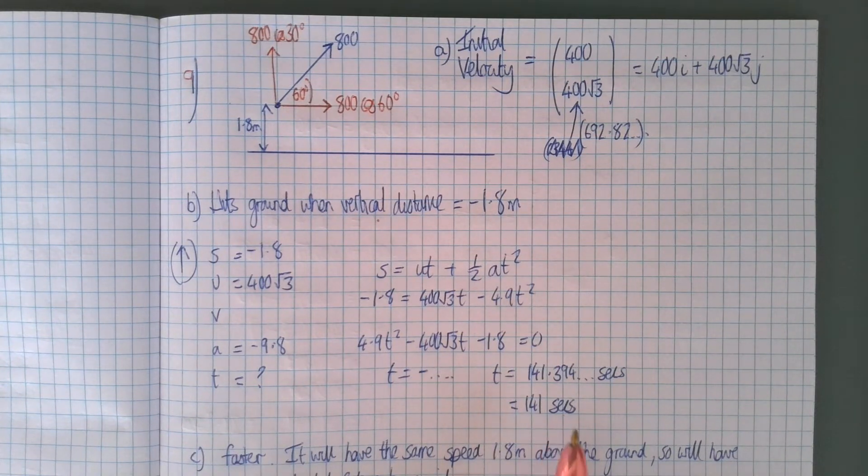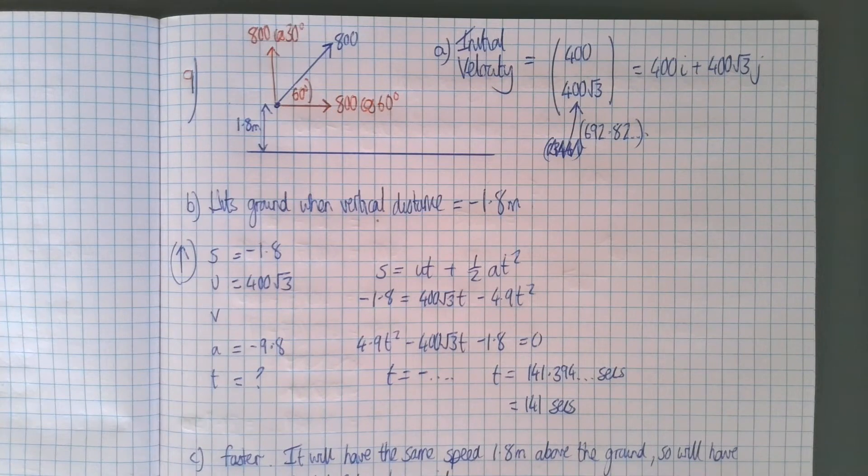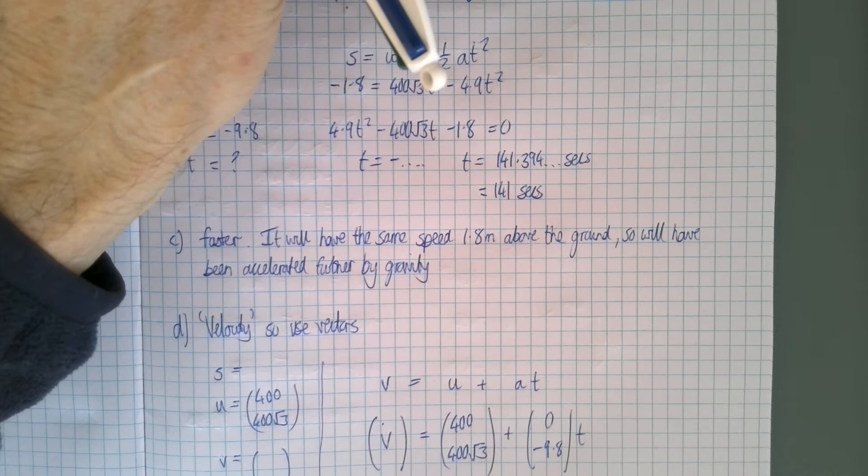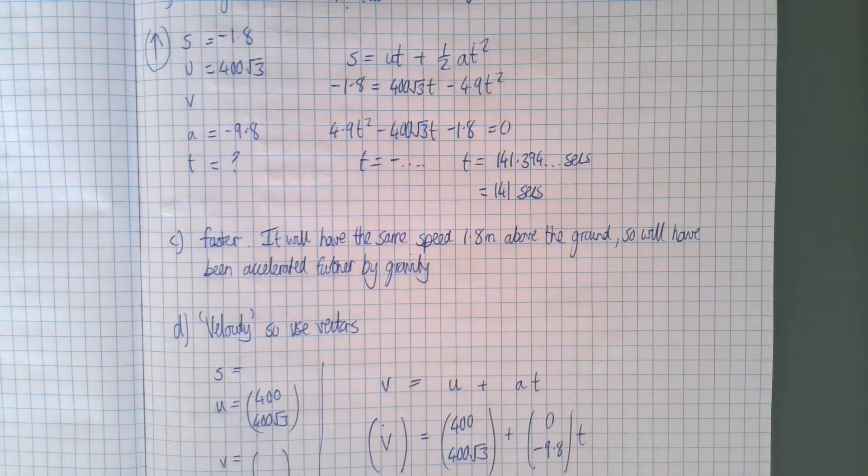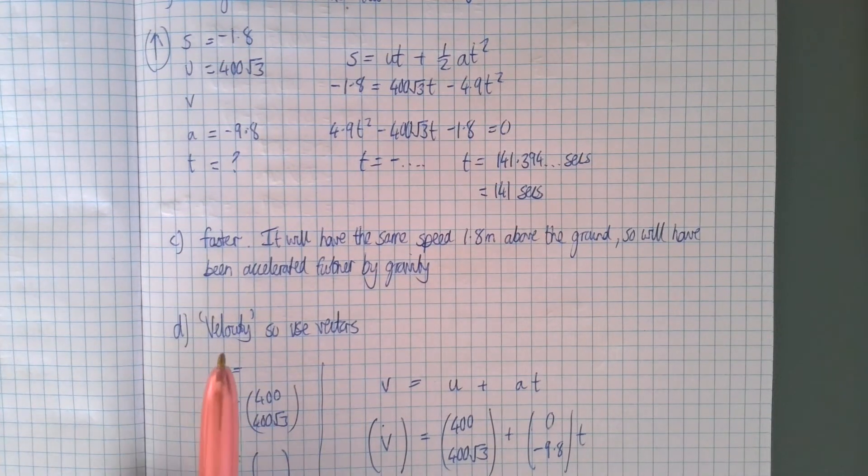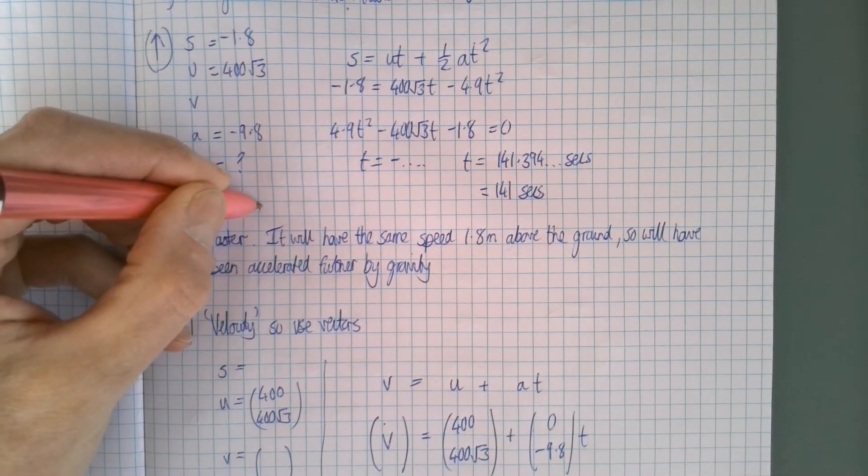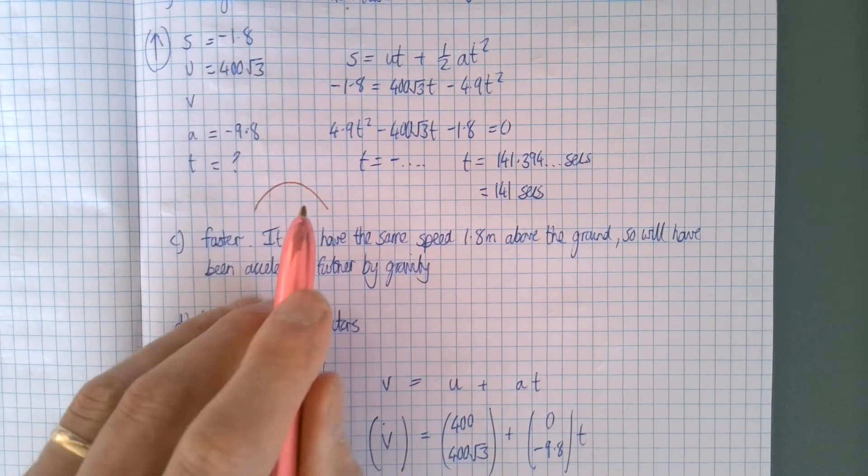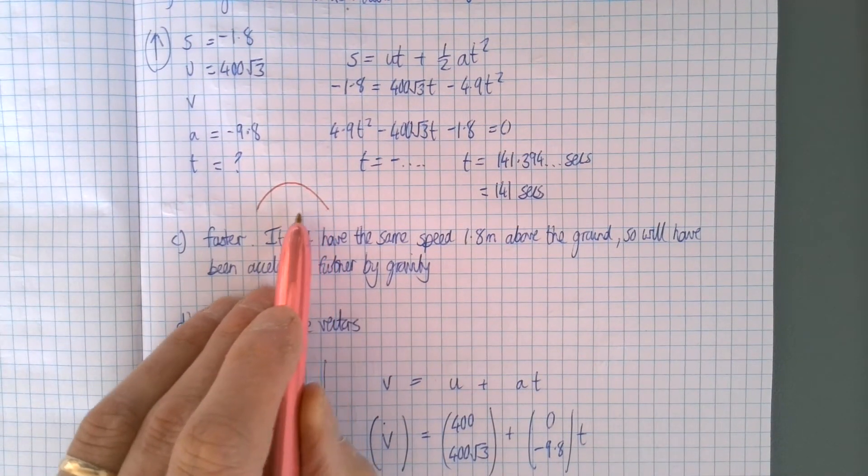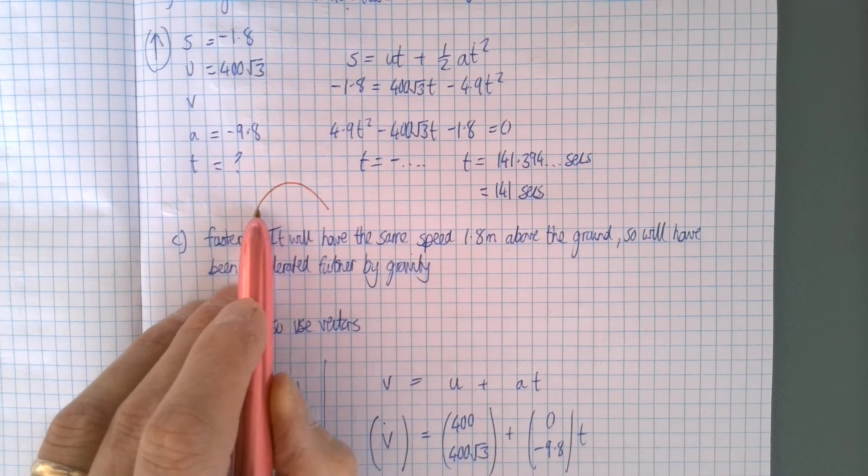It then asks about whether the bullet will be traveling fast when it hits the ground compared to when it was fired. Well again we're ignoring all air resistance, so this is maybe a bit counterintuitive. You always hear about people being injured in places where guns get fired in the air. But yes, using this model it will be traveling faster because when it is 1.8 meters off the ground on its way down it will have the same speed as it did when it left.